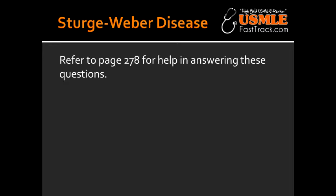Sturge-Weber Disease manifests with port wine stain, which is the nevus flammeus on the face. There is also ipsilateral leptomeningeal angiomatosis, which is a type of intracerebral arteriovenous malformation.